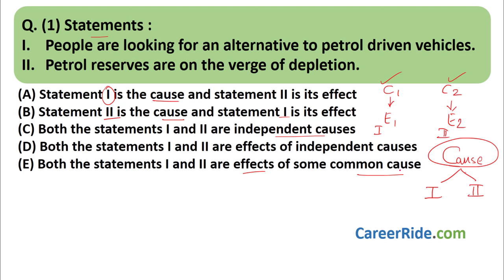For example of option five: it rains heavily, and one effect is that all people become wet, and another effect is that the roads get clogged with water. Both of them are effects, and the common cause is heavy rainfall. Now let's look at how to use the 'so' or 'therefore' tip.